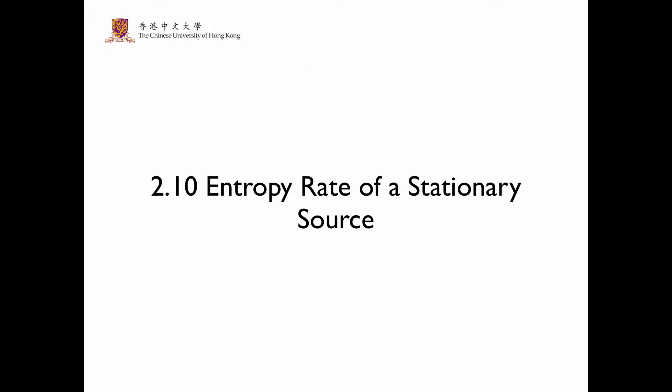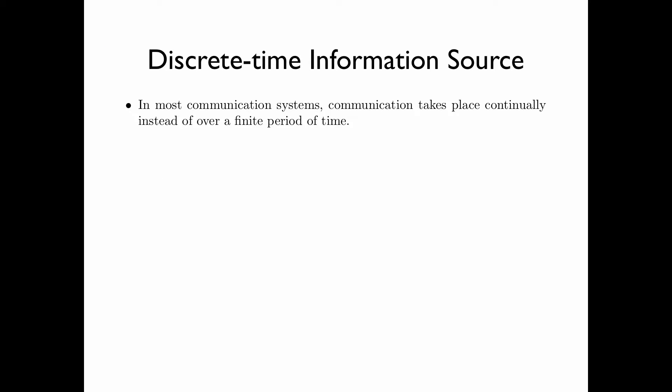Section 2.10: entropy rate of a stationary source. In most communication systems, communication takes place continually instead of over a finite period of time. Examples are TV broadcast, the internet, and cellular systems.